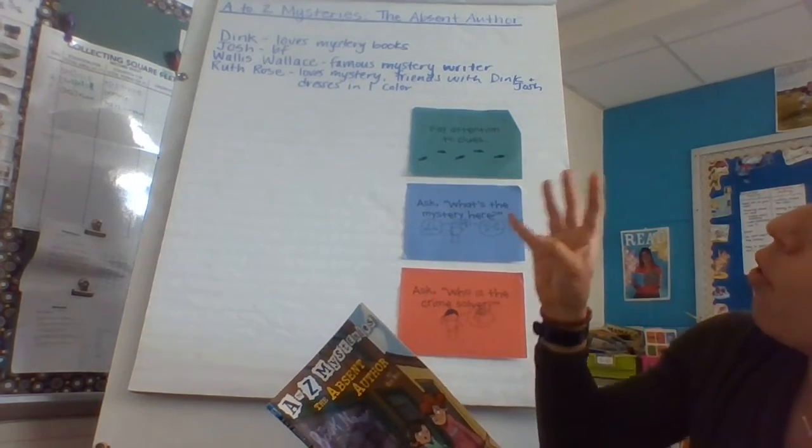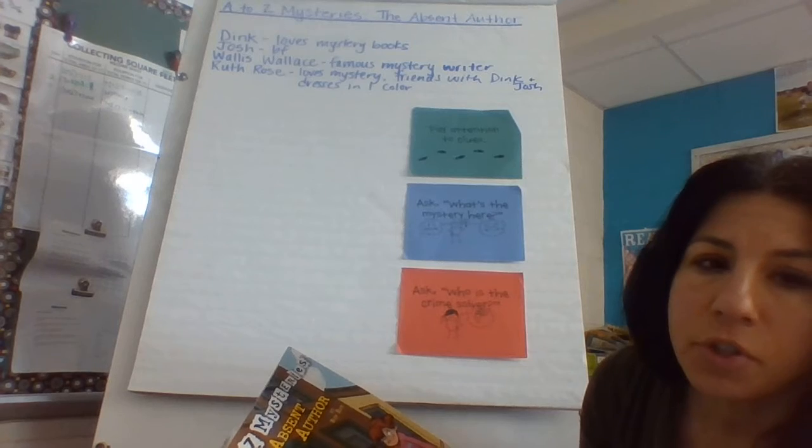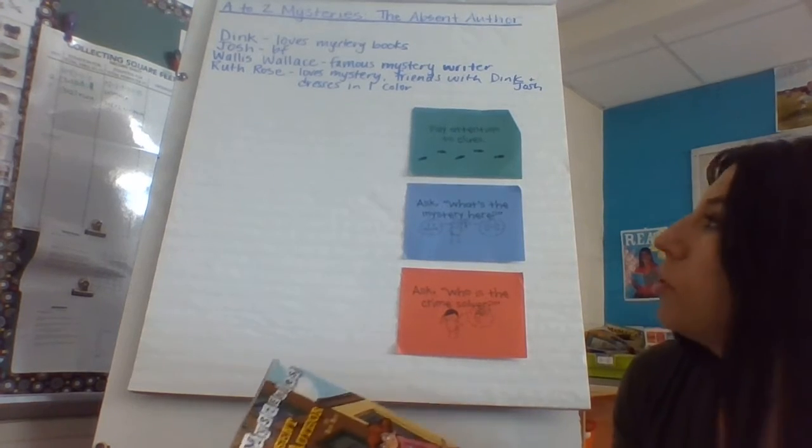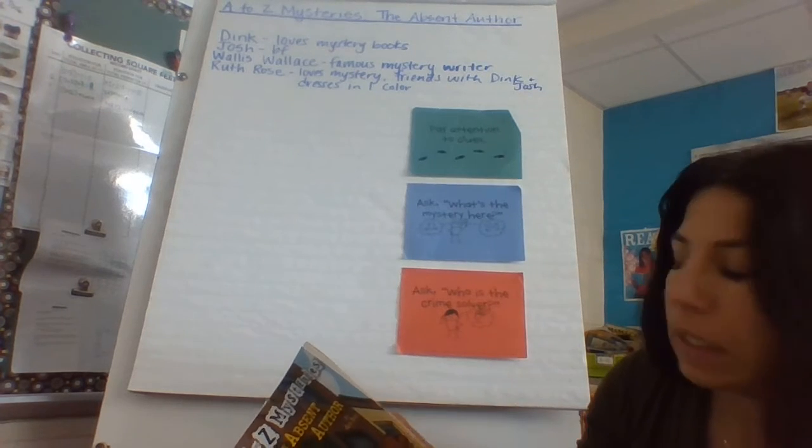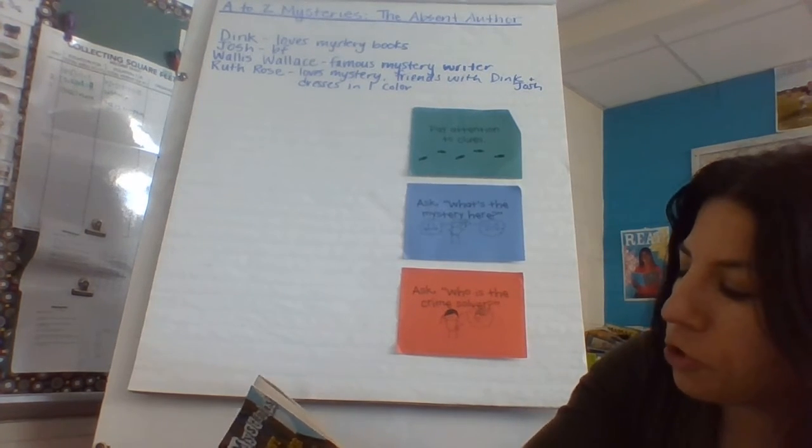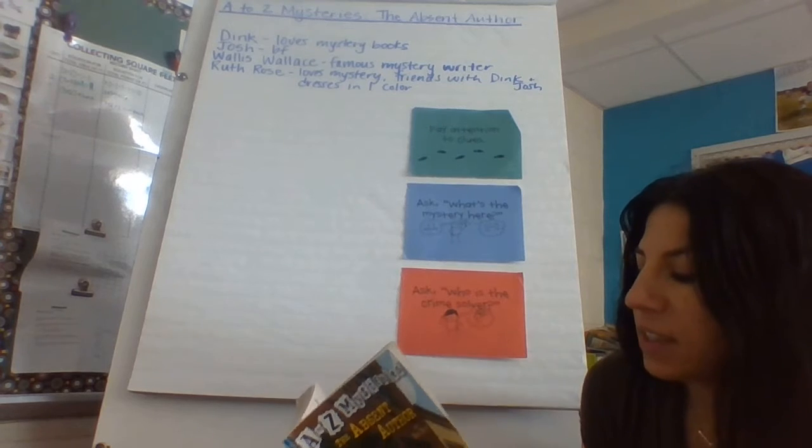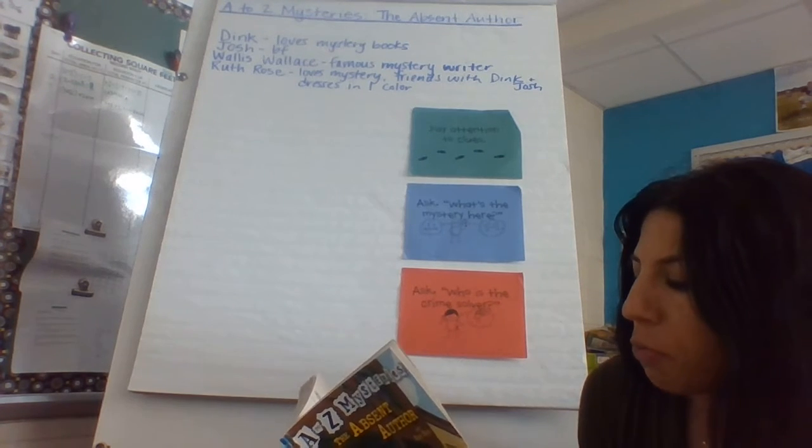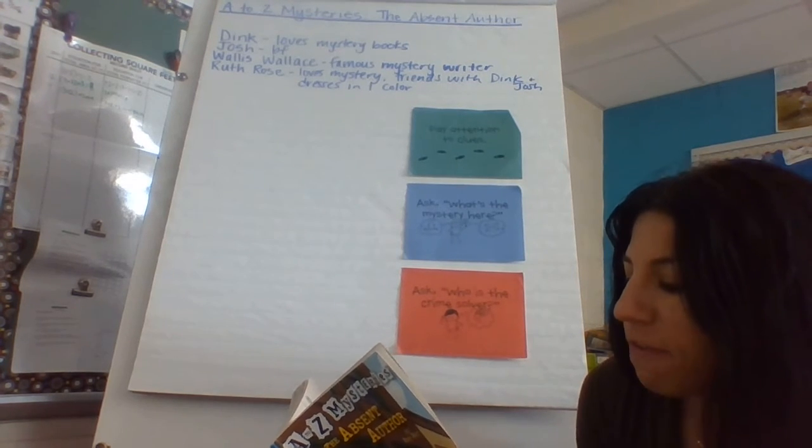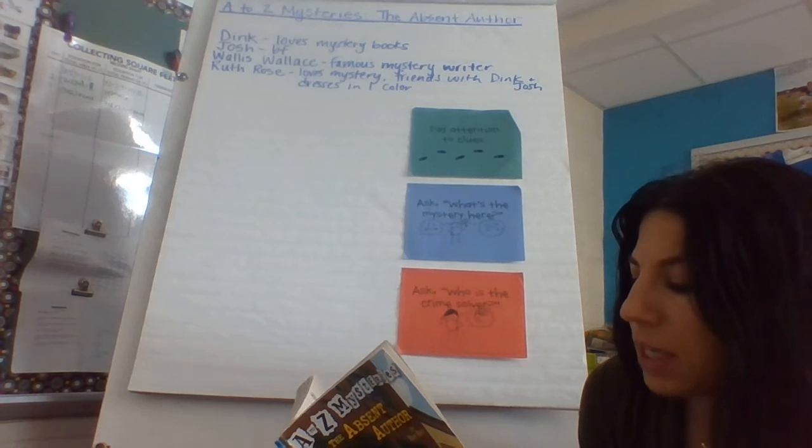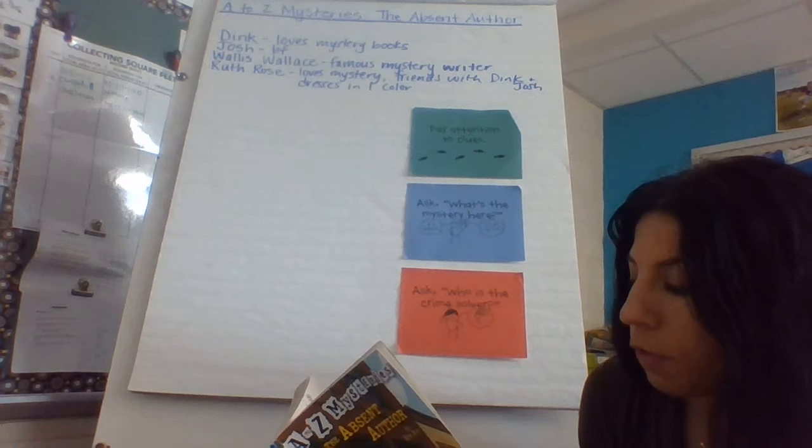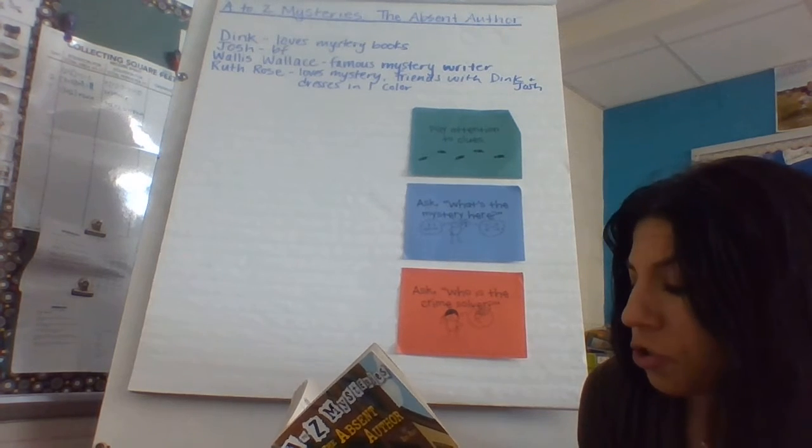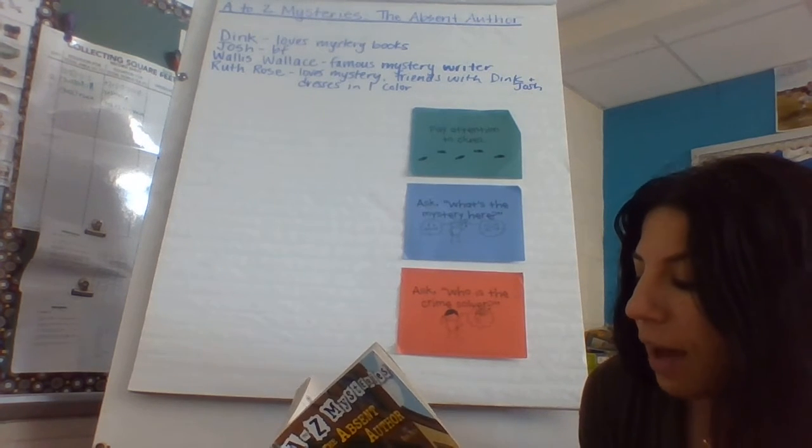We know that our four main characters that we've been introduced to so far include Dink, Josh, Wallace Wallace, and Ruth Rose. Chapter two. Dink raced into the book nook. Josh and Ruth Rose were right behind him. They found three seats behind Tommy Tomko and Eddie Carini. Dink plopped his backpack on the floor. The clock over the cash register said three minutes after 11.